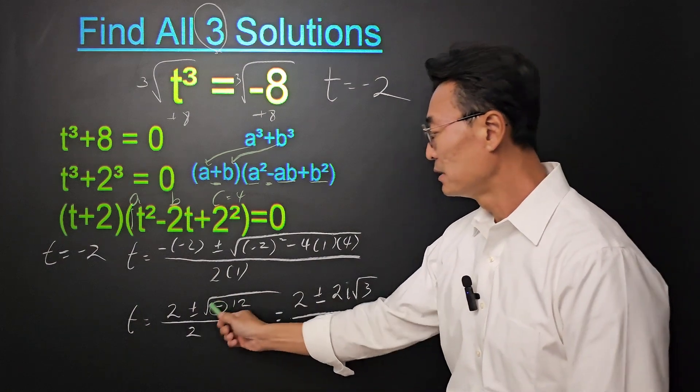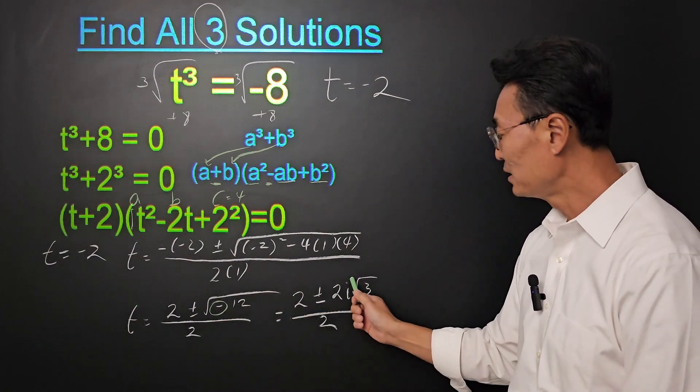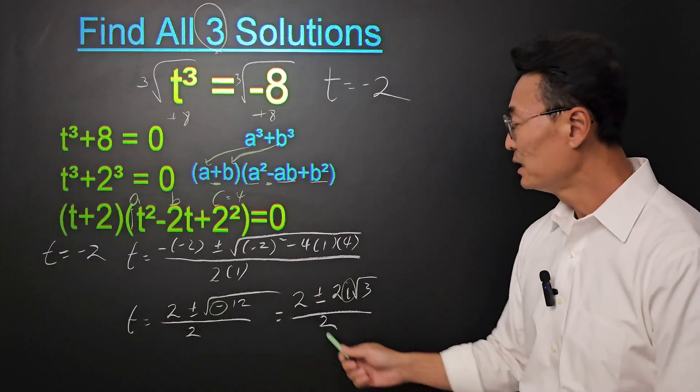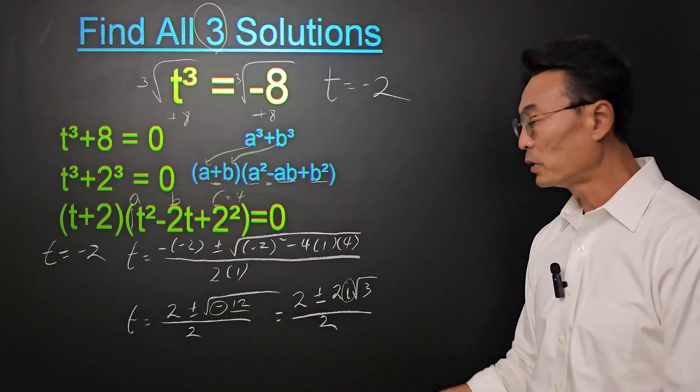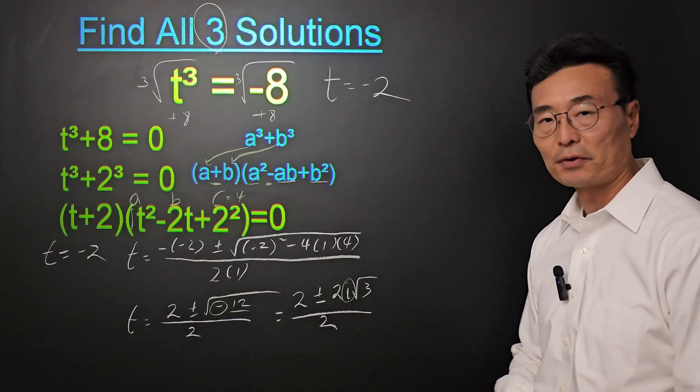So that negative sign, we took it out and it became the i. And then the square root of 12, we have the 2 root 3.